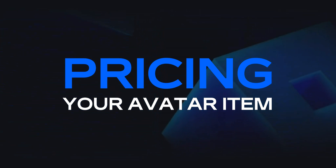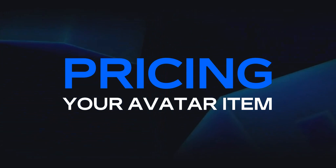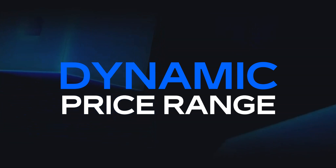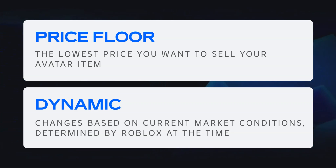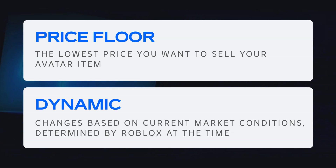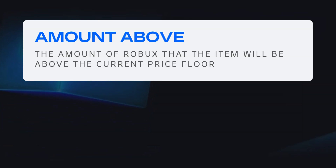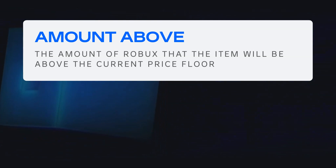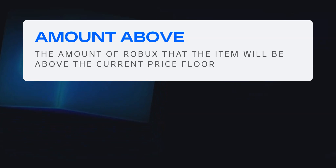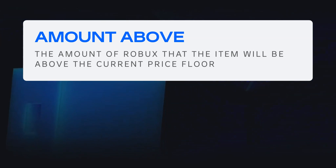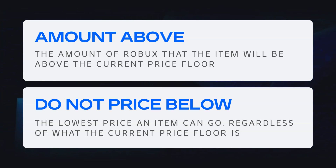The next important step is pricing your avatar item. When listing your marketplace item, you must set your price within the appropriate dynamic price range for that asset type. A price floor is the lowest price an item can be sold for, and what makes it dynamic is based on current marketplace conditions, which Roblox can update at any time — most changes within a range of 15 Robux up or down. Creators can set two types of price controls: Amount Above Price Floor and Do Not Price Below. Amount Above Price Floor is the number of Robux the item will be above the current price floor — for example, if the price floor is 50 Robux and you input 5 Robux, the item will be priced at 55 Robux. You can set this to 0 if you want your item to always be priced at the floor. Do Not Price Below is the lowest price your item can go; it is optional and will always be respected — for example, inputting 200 Robux means your item will never drop below 200 Robux regardless of the price floor.